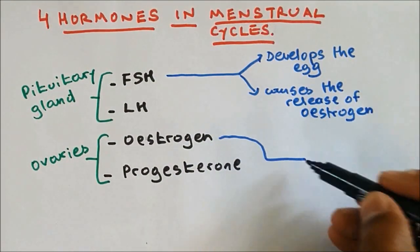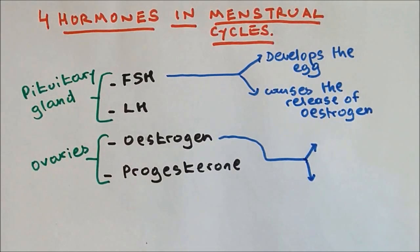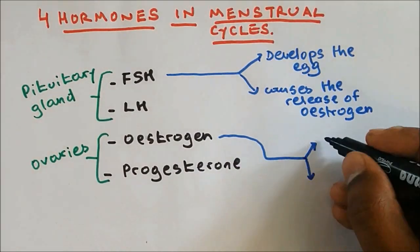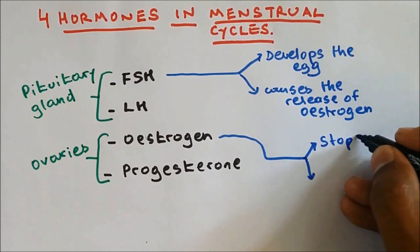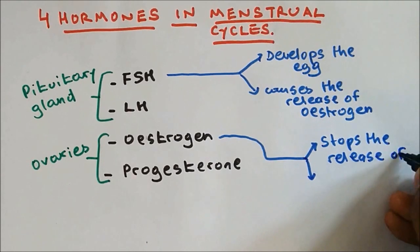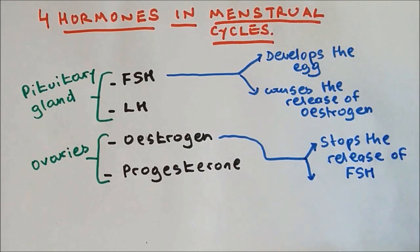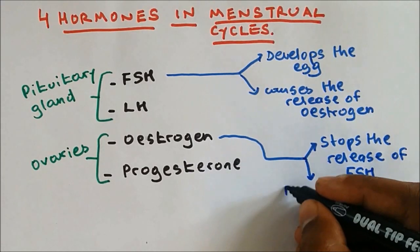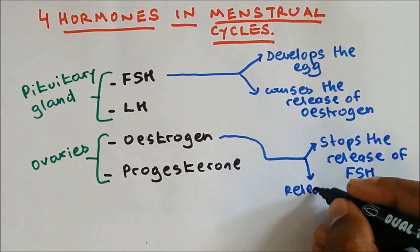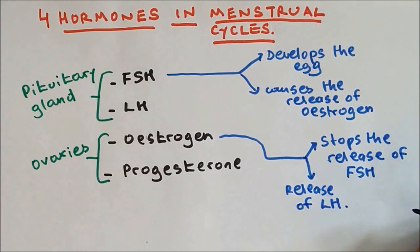Oestrogen also has two functions. It stops the release of FSH, which is Follicle Stimulating Hormone, and it causes the release of LH, which stands for Luteinizing Hormone.